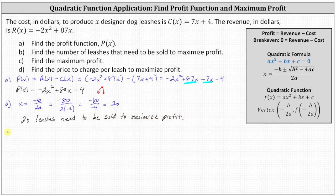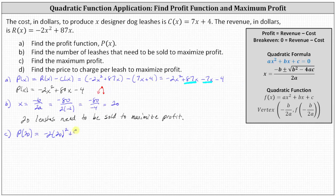For part c, to find the maximum profit, we determine the profit when x equals 20, meaning p of 20. So p of 20 equals negative 2 times the square of 20, plus 80 times 20, minus 4. The function value is equal to 796, which is the maximum profit.